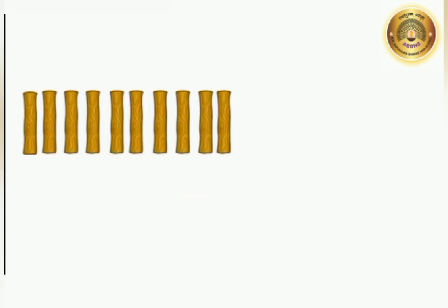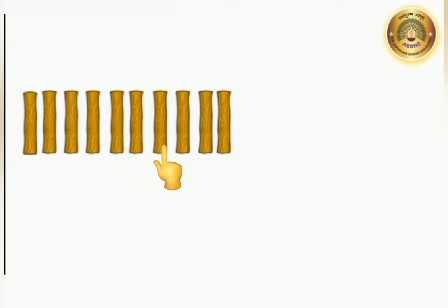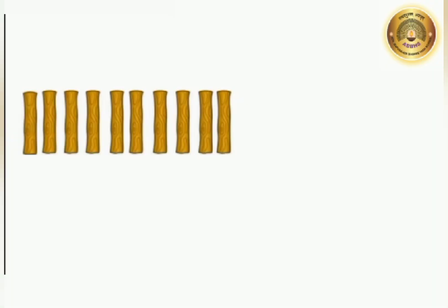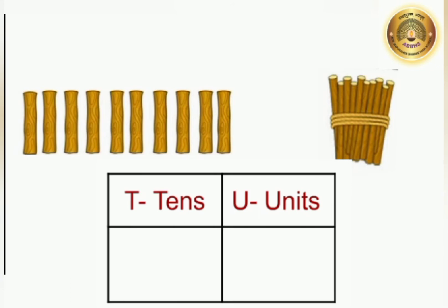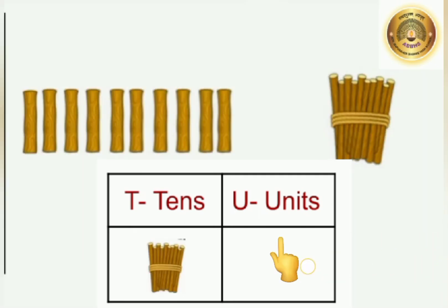Here, 10 matchsticks. Let us count: 1, 2, 3, 4, 5, 6, 7, 8, 9, 10. Now, what we are going to do? We are going to make a group — make a bunch of them. Then, we are going to keep this bunch on the left side, and on the right side we are going to write 0.